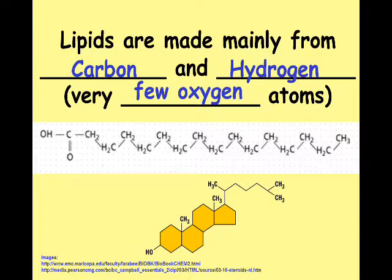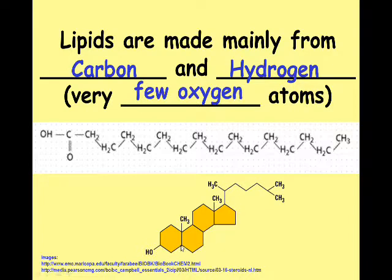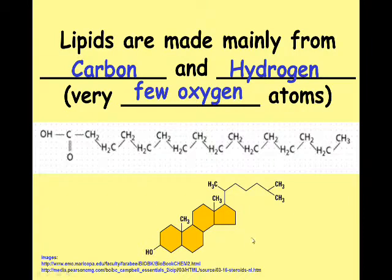Another pattern we see in some kinds of lipids is the ring shape. If you look at this ring, it's showing you the overall shape of the molecule. Everywhere we have a corner in our hexagon, we have a carbon atom. This also is a molecule with lots of carbons and hydrogens but very few oxygens. This shape, where we have these four ring-shaped parts to it, is called a steroid. Steroids also are kinds of lipids.